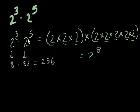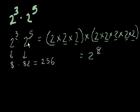3 plus 5 equals 8, and that makes sense: 2 to the 3rd is 2 multiplying by itself 3 times, 2 to the 5th is 2 multiplying by itself 5 times, and when we multiply them together, we multiply 2 a total of 8 times. Let's do another example.